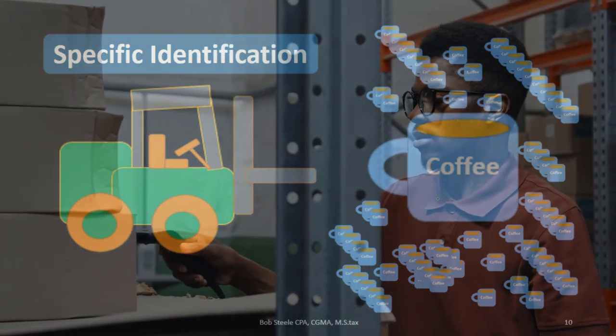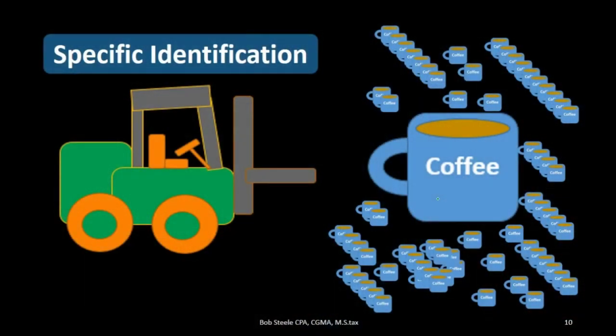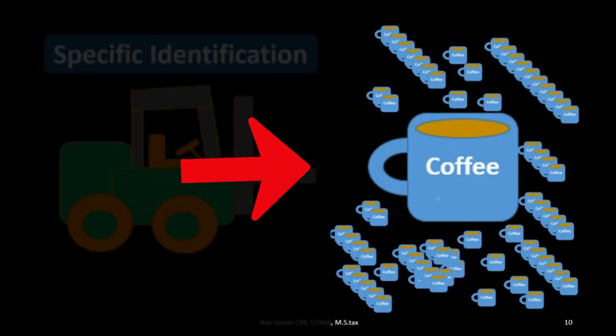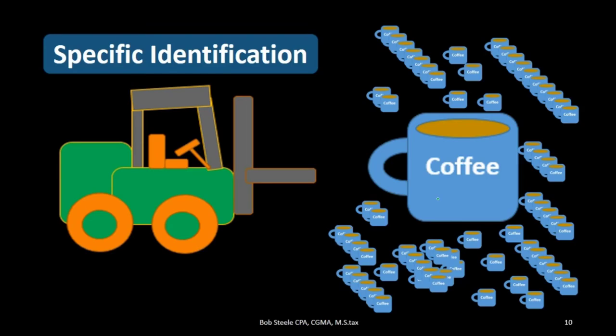If we have small items that are all the same, we might want to use an estimating method. Those estimating methods include first-in first-out (FIFO), the average method, and last-in first-out (LIFO), which we'll talk about next time.